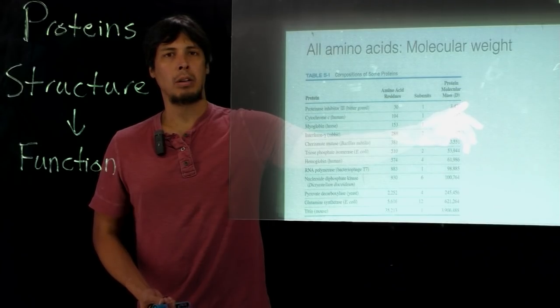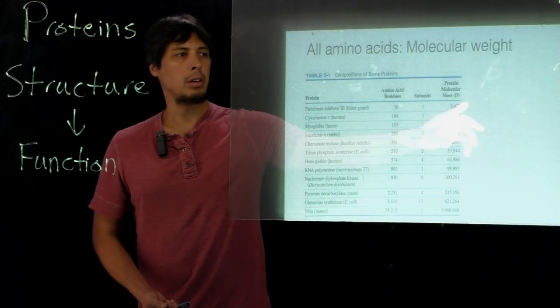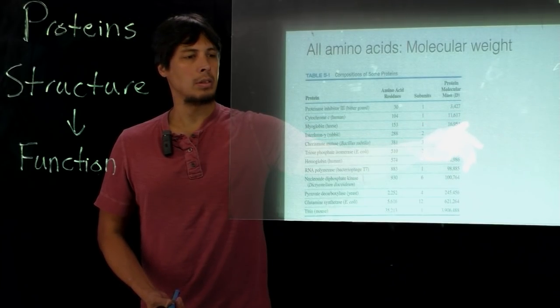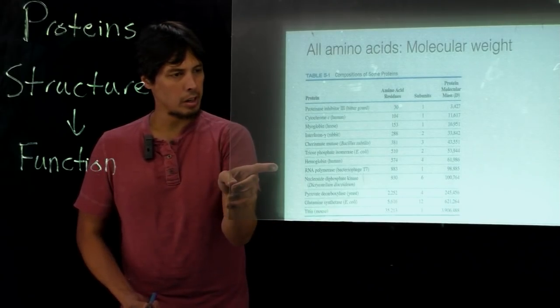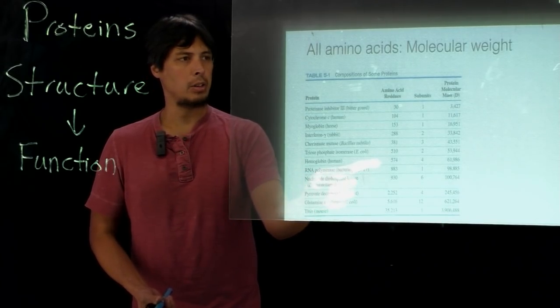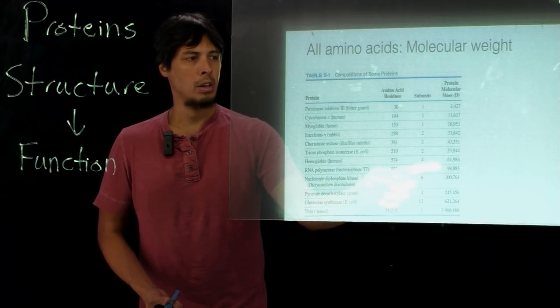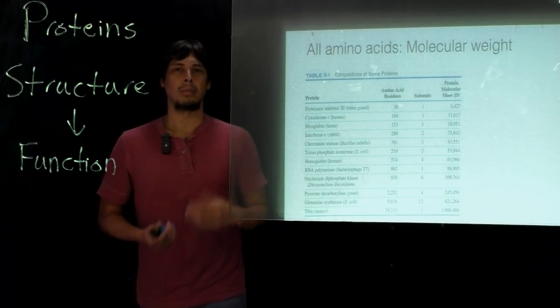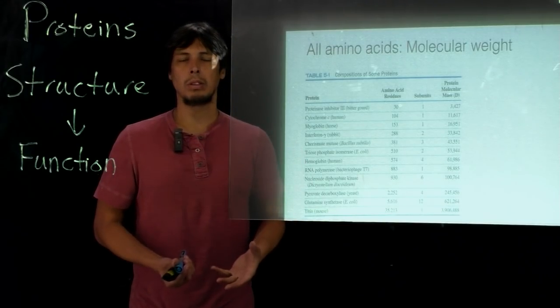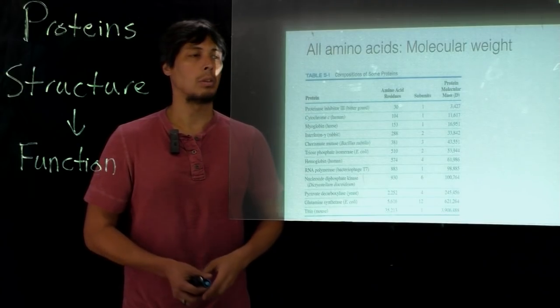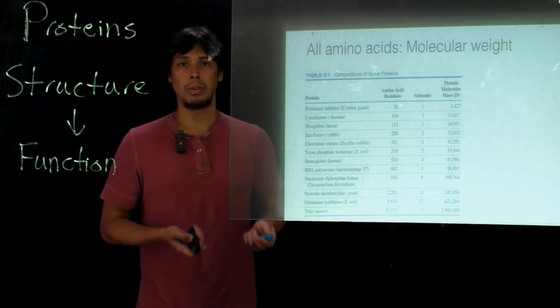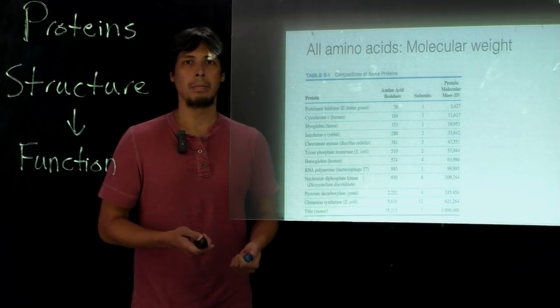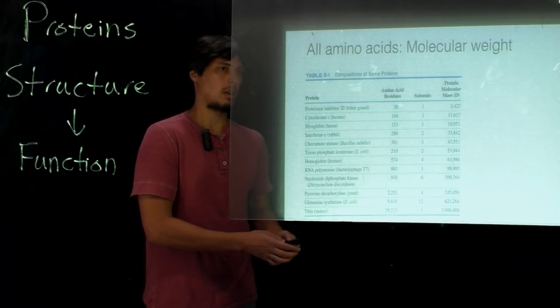If we look at RNA polymerase, which is also a single subunit, it has 883 amino acid residues and that goes higher to 98,885 daltons. So that makes sense - the more amino acid residues we have, the higher the molecular weight of the protein is going to be. All amino acids within the primary sequence contribute to this molecular weight.